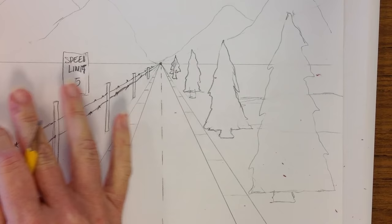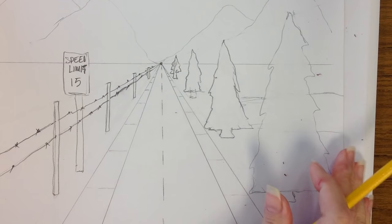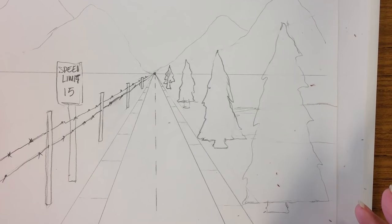Maybe you add like a cow or a horse over there, or whatever you want to add to your landscape, your one point perspective landscape. It's just going to make it more interesting and make it more unique for you.